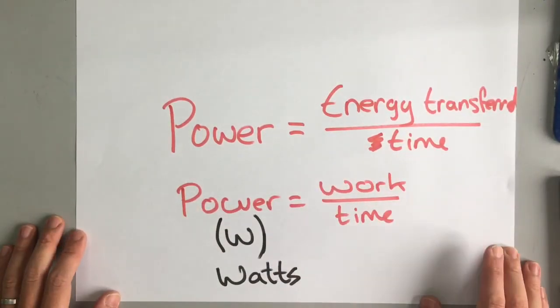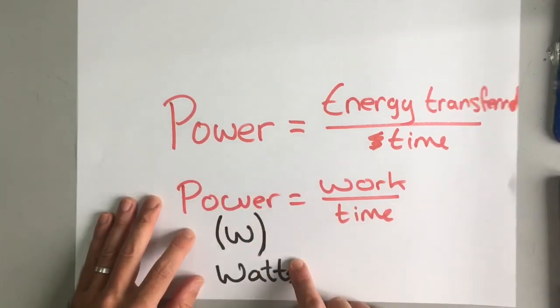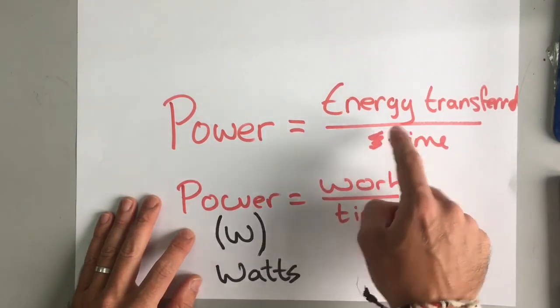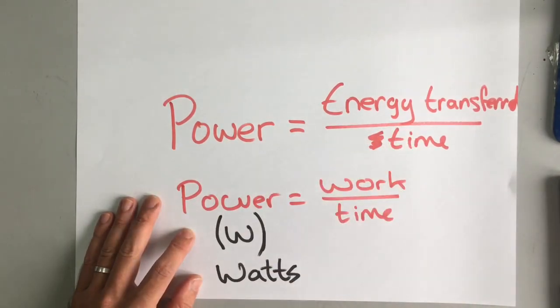This applies to anything that transfers energy. Again, have a look in the room around you. See if you can spot something, work out how powerful it is. Some electrical appliances even have the power in watts written on them. And that's how much electrical energy they transfer every second.